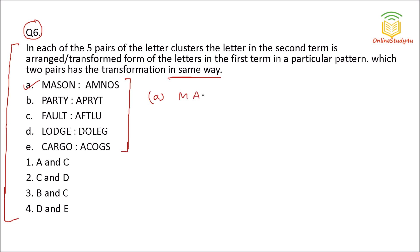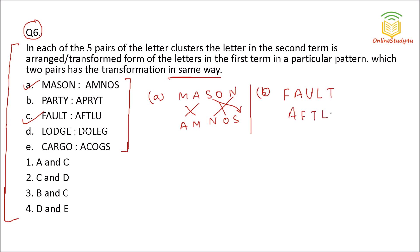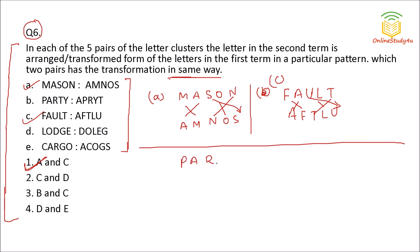Option A: MASON — A and M are interchanged, N and O are interchanged, and S comes to the end. Option C: FAULT — A and F are interchanged, T comes forward, L and T are interchanged, and U goes to the end. So A and C have a similar kind of transformation. Option B: P and A are interchanged, R stays, and T and Y are interchanged — a different pattern.